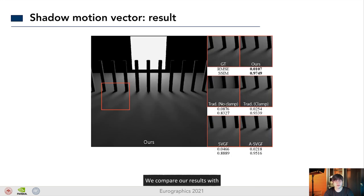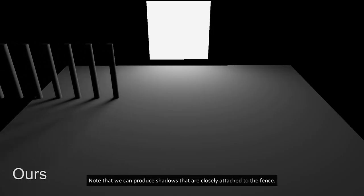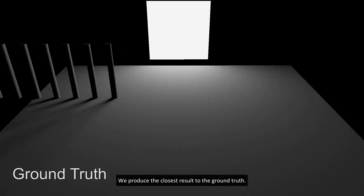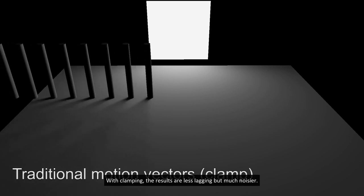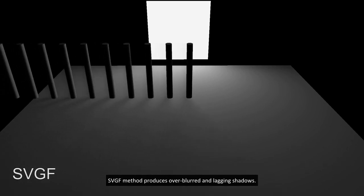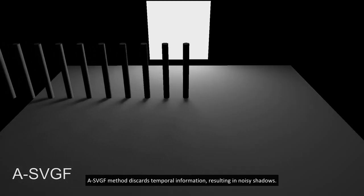We compare our results with one generating using traditional motion vectors with and without the neighborhood clamping approach used in temporal filtering. We also compare our method with SVGF and ASVGF. Note that we can produce shadows that are closely attached to the fence. We produce the closest result to the ground truth. Traditional motion vectors produce significantly ghosting artifacts. With clamping, the results are less lagging but much noisier. SVGF methods produce over-blurred and lagging shadows. ASVGF methods discard temporal information resulting in noisy shadows.